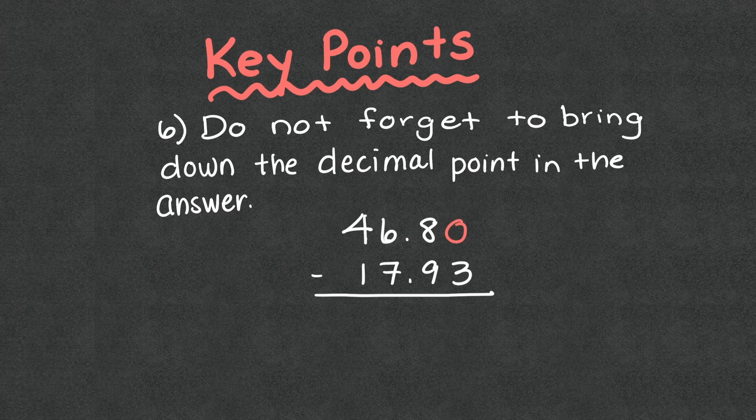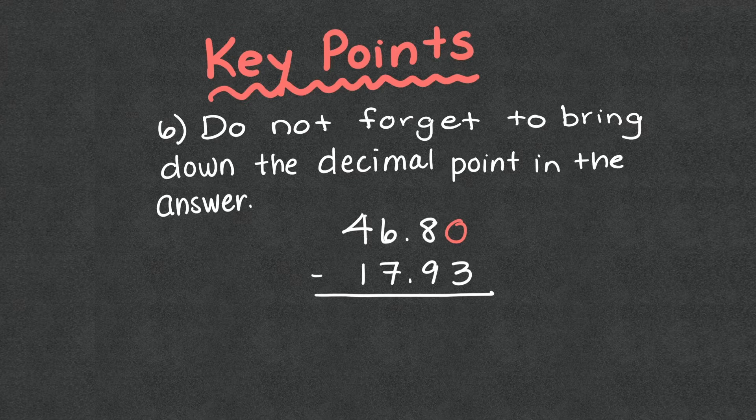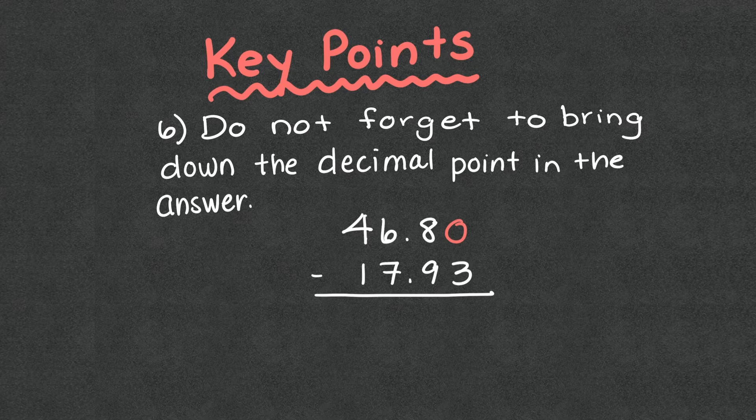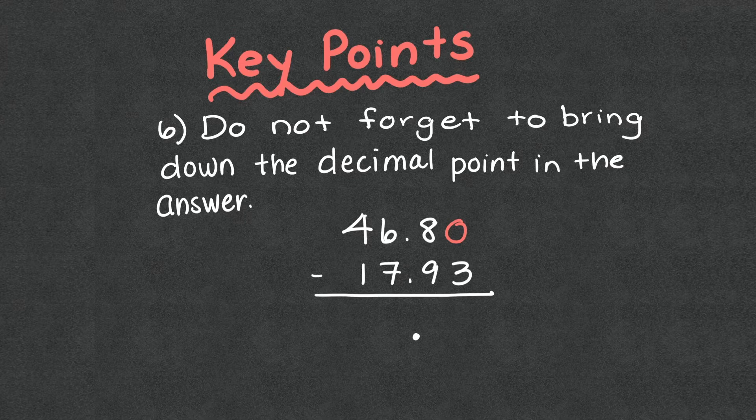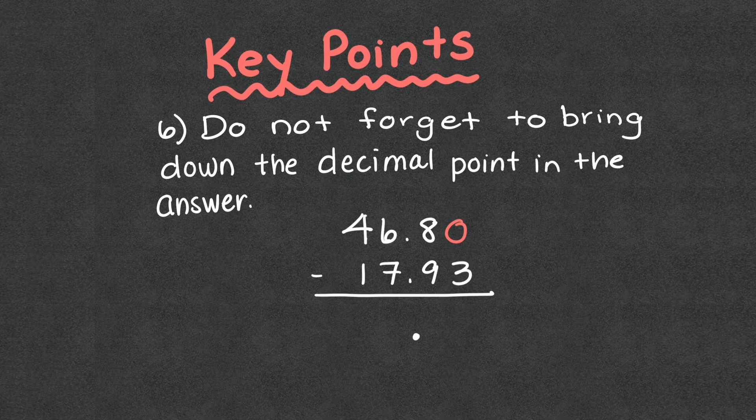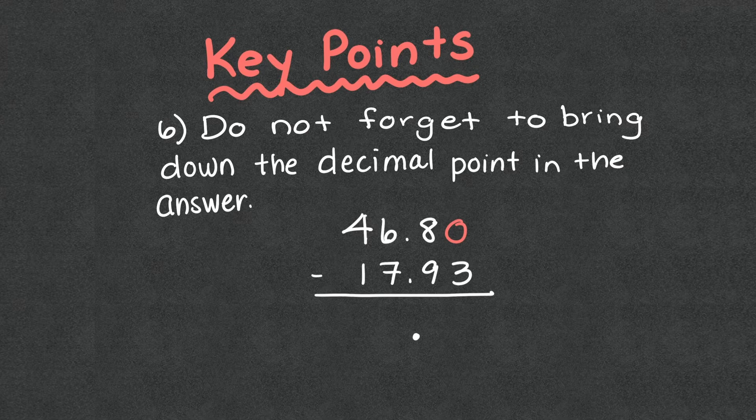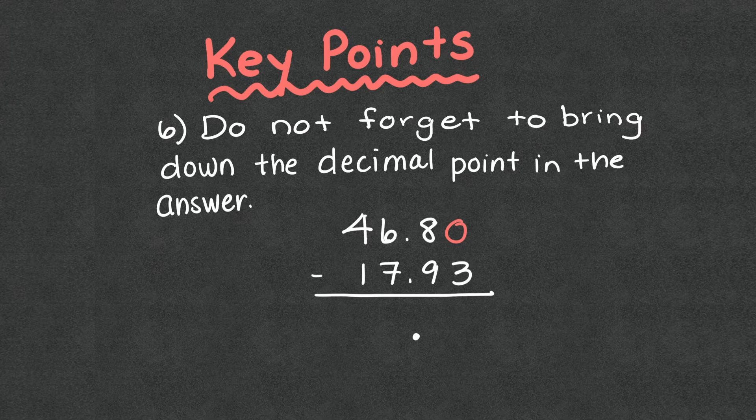Six, do not forget to bring down the decimal point in your answer. We just talked about this before, but I guarantee it is one of the biggest common mistakes. You see the decimal point in your problem. It does not matter if you solve the whole thing and bring it down, if you bring it down in the beginning, or if you bring it down when you get to it. The most important part is that you bring it down. Otherwise, your answer is going to be maybe 10, 100, 1000 times larger than you really intended. So the decimal point has to find its way back in.